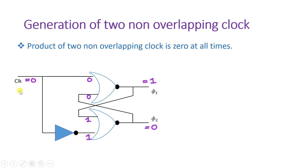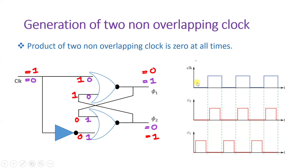When clock signal equals 1, then 1 comes here and after inversion 0 comes here. As per NOR gate operation, that will make the output 0, and 0 comes in feedback, so 0 and 0 makes output 1. So phi 2 will be 1 and phi 1 will be 0. So when clock is 0, phi 1 is 1 and phi 2 is 0; and when clock is 1, phi 2 is 1 and phi 1 is 0. This is what non-overlapping clocks mean — if you multiply these two the resultant will be 0. I hope you have understood this video. Thank you so much for watching. Please do give your valuable suggestions, as your suggestions matter and based on them I'll be making future videos to solve your queries.